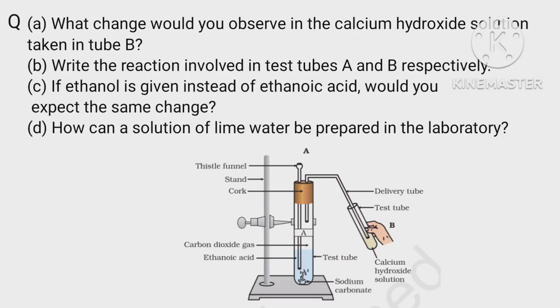What change would you observe in the calcium hydroxide solution taken in tube B? Write the reaction involved in test tubes A and B respectively. If ethanol is given instead of ethanoic acid, would you expect the same change? How can a solution of lime water be prepared in the laboratory?